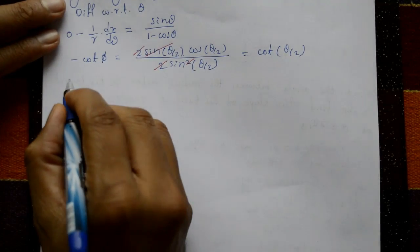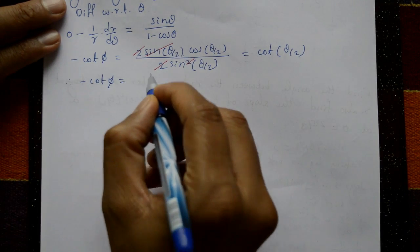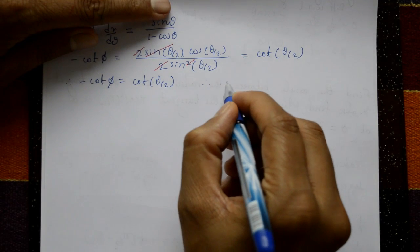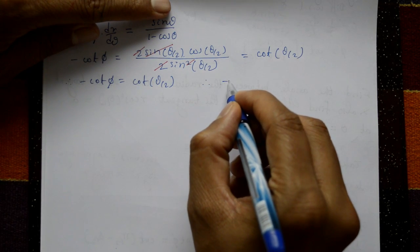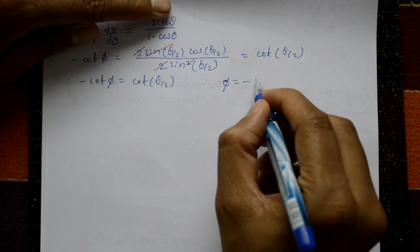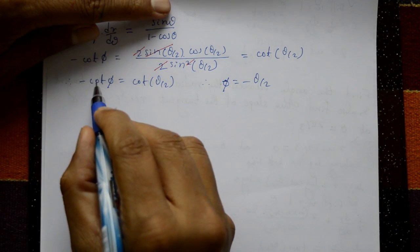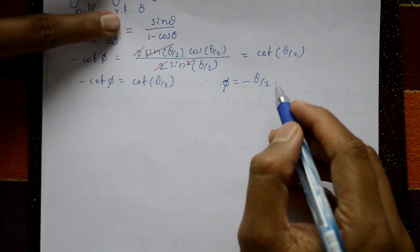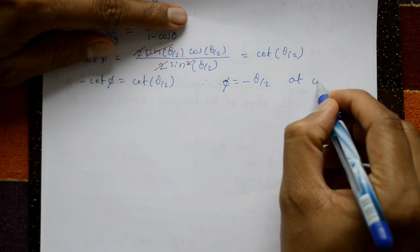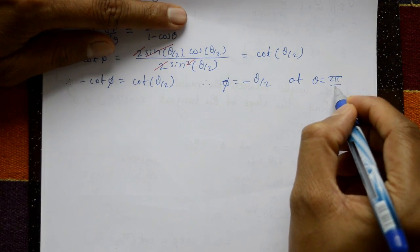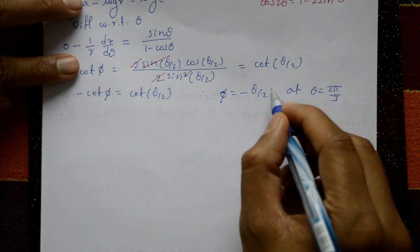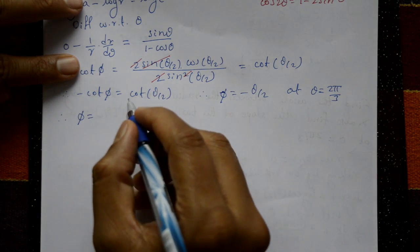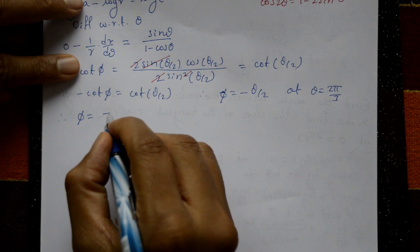Therefore −cot φ = cot(θ/2), which gives cot φ = −cot(θ/2), so φ = −θ/2. At θ = 2π/3, we get φ = −π/3.